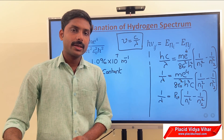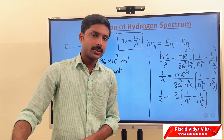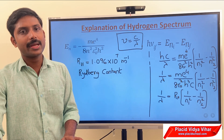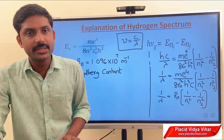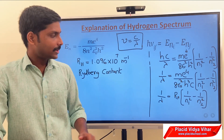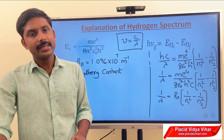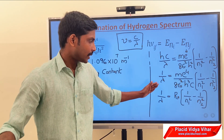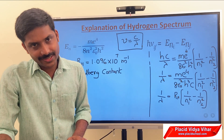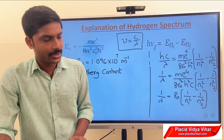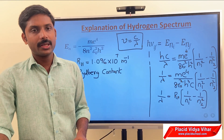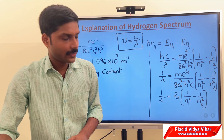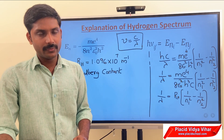This can be simply written as 1 over lambda equals R_H into 1 over n1-squared minus 1 over n2-squared, where R_H is called the Rydberg constant, whose value is 1.096 times 10 to the power 7 meter inverse. It has units of meter inverse because lambda is wavelength — a measure of length — so 1 over lambda gives meter inverse. This is the final important equation derived to explain the hydrogen spectrum.